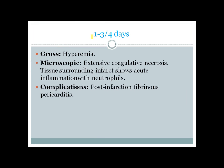In the first 1 to 4 days, gross appearance of the heart is hyperemic. Microscopic features show extensive coagulative necrosis and increasing neutrophils causing acute inflammation. The most important complication in this phase is post-infarction fibrous pericarditis, which commonly occurs on days 2 to 4.